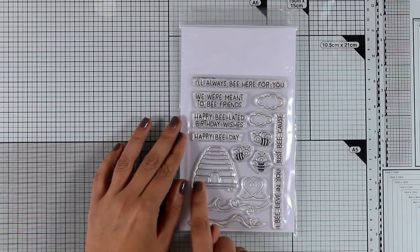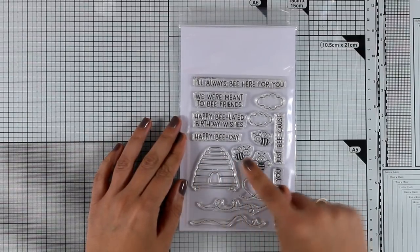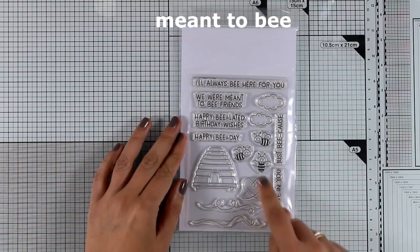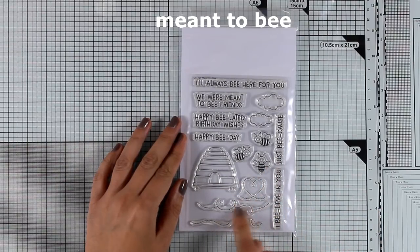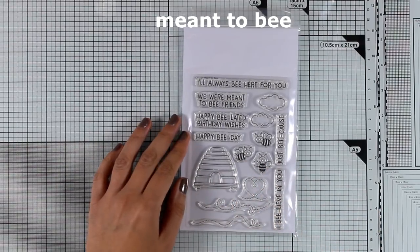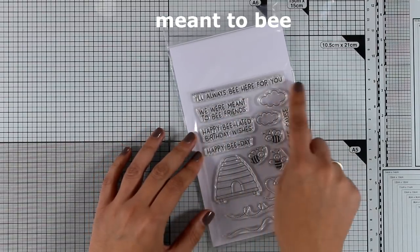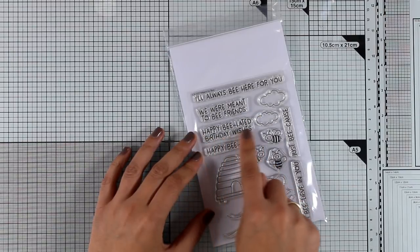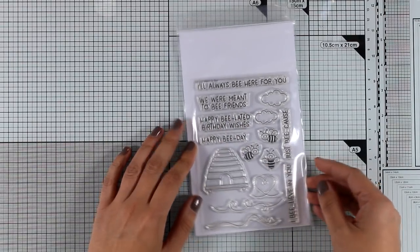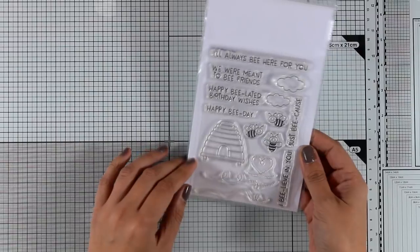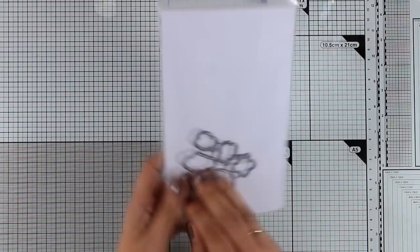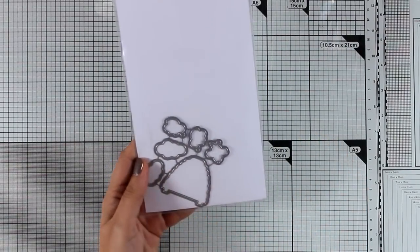Now let's move on to another adorable stamp set which is going to be a hit as well from this release. This is called Meant to Be and as you can see it comes with three adorable little bees, a beehive as well as lots of trails that you can stamp coming out from the bees as well as lovely sentiments to go along with that. And of course as always you get matching dies if you want to pop out your images on your cards.